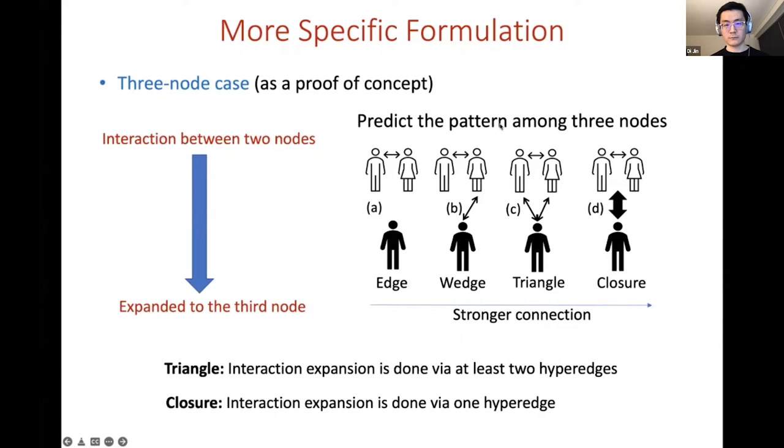The third node has never been connected to the two nodes previously. And the patterns among this kind of three nodes include four types. The first type is called no expansion that corresponds to the pattern A here, we will also call it as the edge type. So basically the interaction appears between two nodes and such interaction will not expand to a third node.